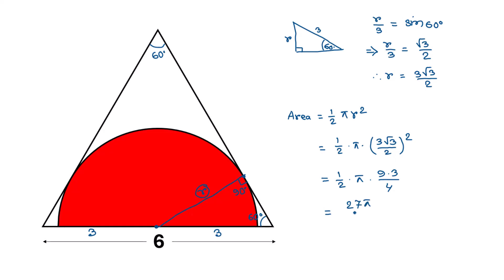So 27π divided by 8 gives an approximate value of 10.6. Therefore, the area of this semicircle is 10.6 square units.